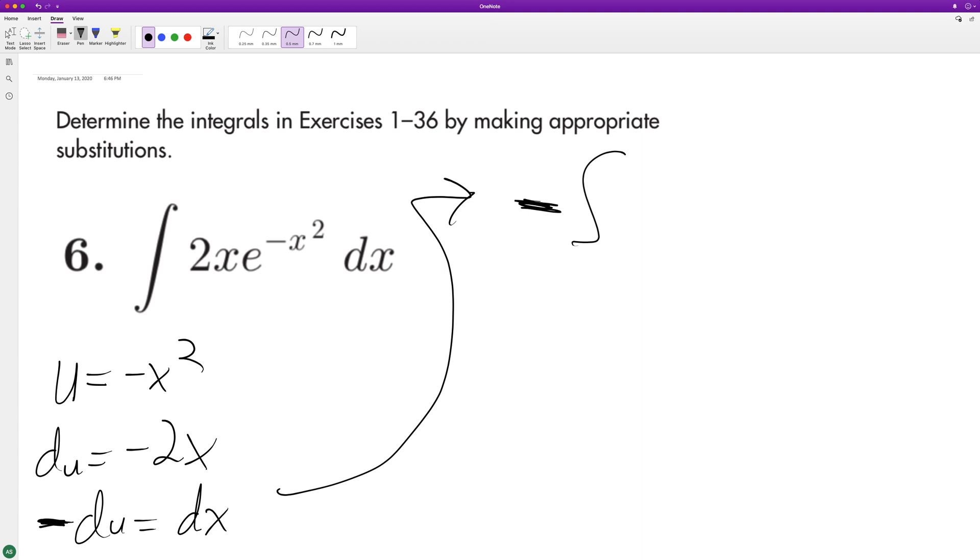and we'll have our e raised to the u du. So when we integrate this, we just end up with negative e raised to the u plus c, because the derivative of e raised to the u is just e^u, and then integrate that negative e^u.